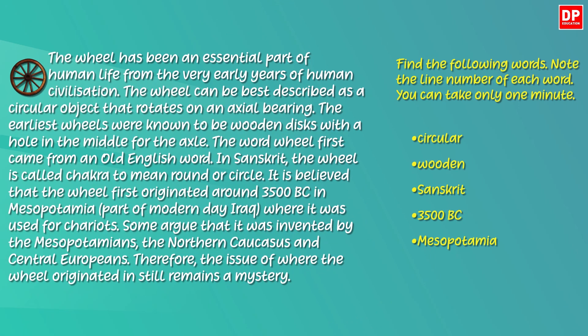How was it? Could you do it within the given time? What about the first word — circular? It's in line 4. The second one is wooden. Yes, it's in line 5. Then Sanskrit. Did you notice the capital S here? That's because it's a proper noun — it's a name of a language. I'm sure the capital letter helped you to find the word quickly. It's in line 7. Next one is a number — that's the only number in the text, so it's very easy to locate it. It's in line 9. What about the last one? Again, it's a proper noun. The line number? Yes, line 10.